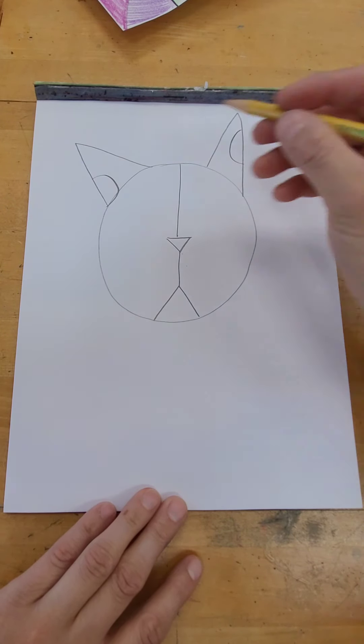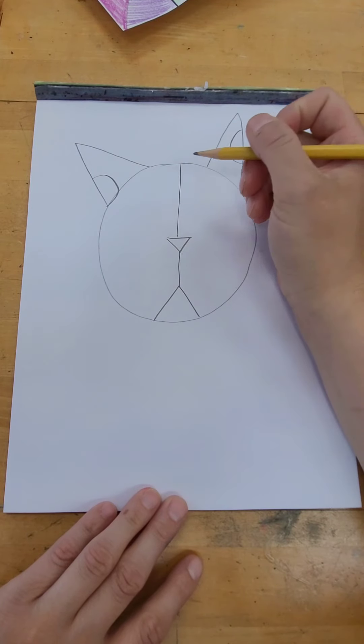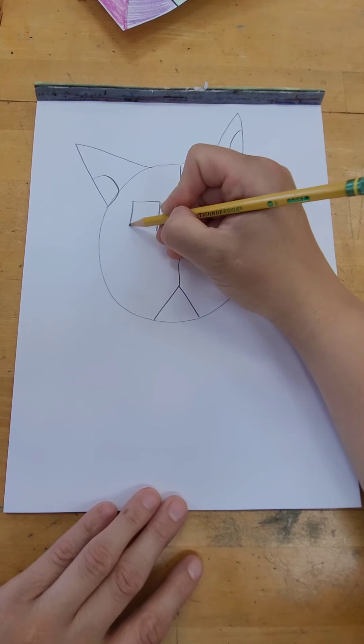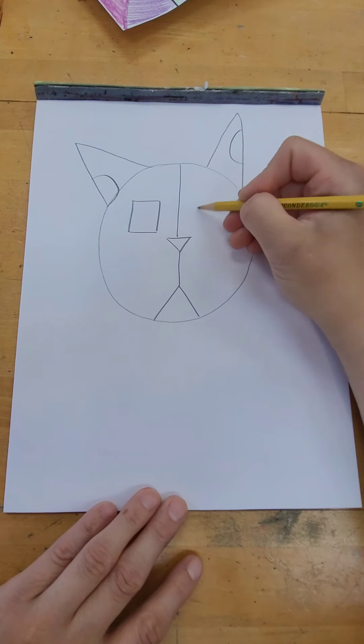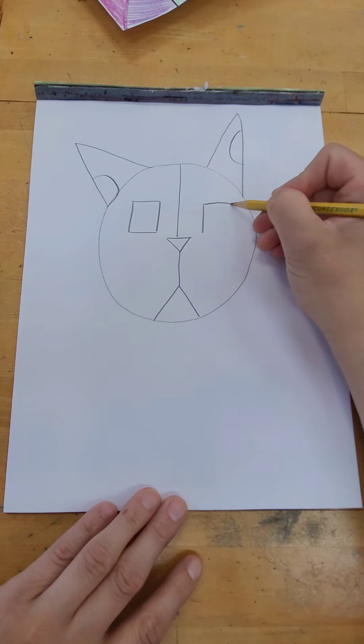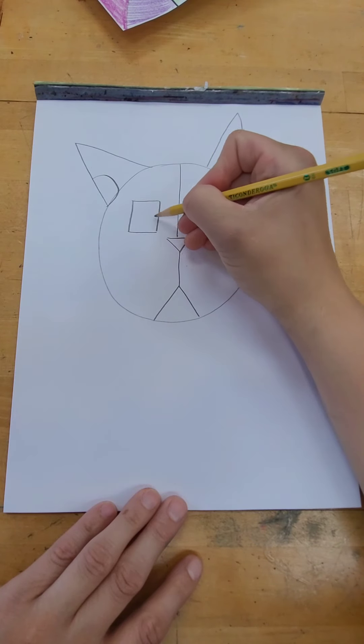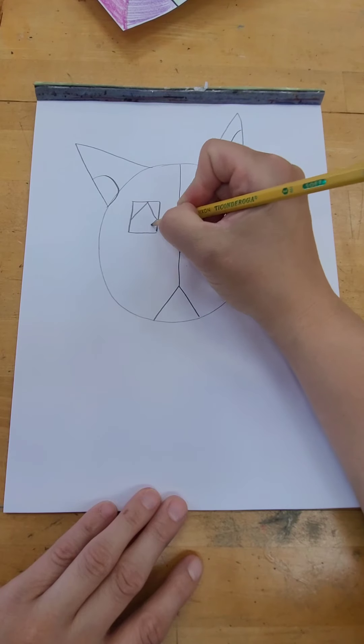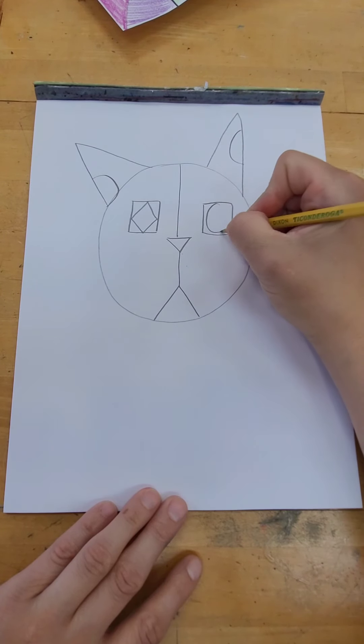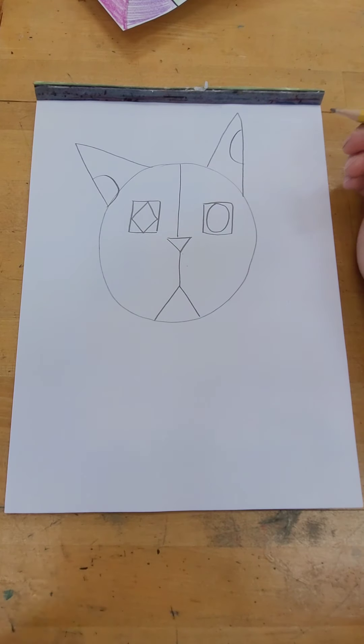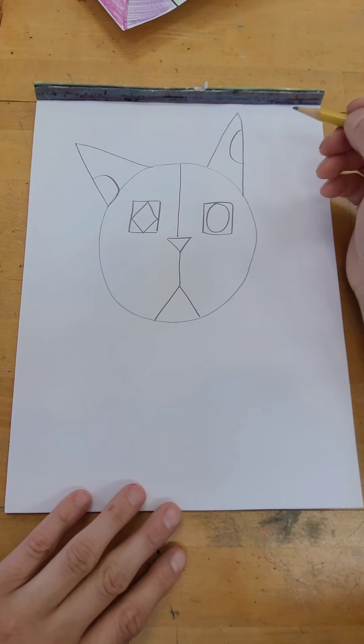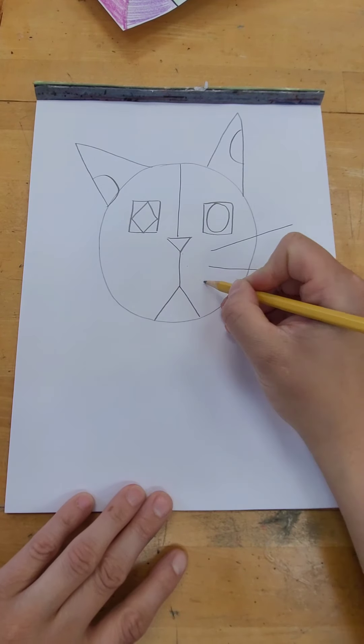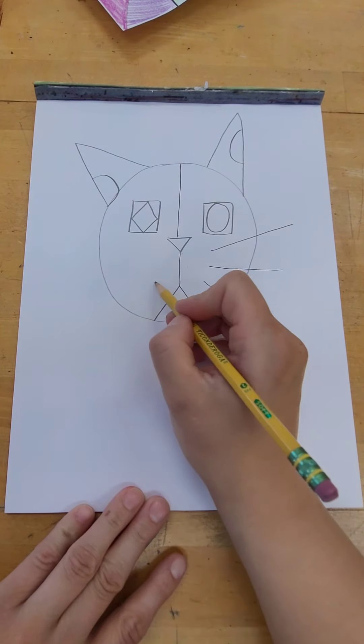For our cat's eyes, we're keeping simple shapes. We're going to be doing a square. We're going to do another square. Now inside the square you can either do a diamond or you can do a circle. I'm going to do one diamond, one circle, but you can decide which one you want to do. After I do the eyes, I'm going to add the whiskers, which are three lines going out: one, two, three, and three on the side: one, two, three.